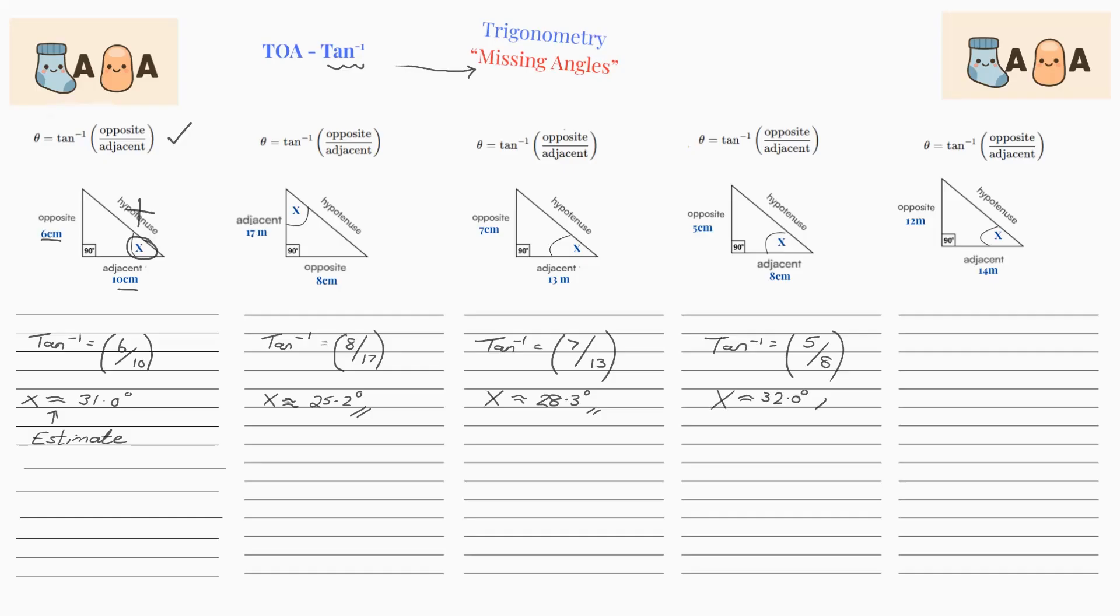And then finally, we have tan inverse equals our opposite is 12, adjacent is 14. And our x, our angle, I've got it at 40 degrees. And that's it.